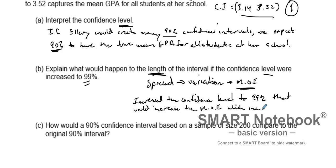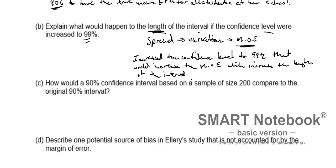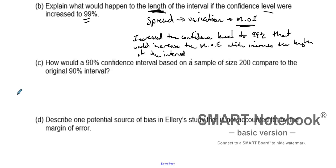Increasing the margin of error increases the length of the interval. So if you increase the confidence level, you increase the margin of error, which then increases the length of the interval. You create more numbers, giving you a better chance of actually capturing the true mean.